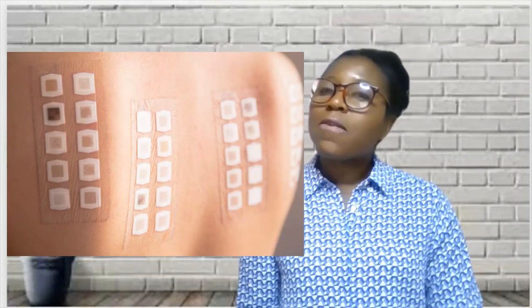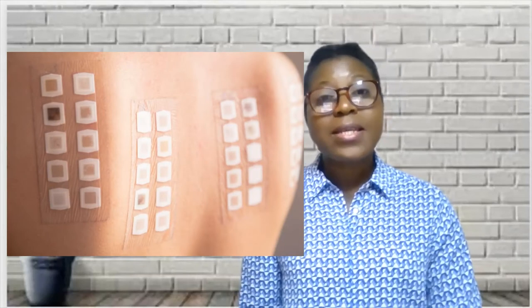Now let's look at how contact dermatitis is diagnosed. Your doctor may be able to diagnose contact dermatitis and identify its cause by talking to you about your signs and symptoms, questioning you to uncover clues about the trigger substance, and examining your skin to note the pattern and intensity of your rash. Your doctor may recommend a patch test to find out if you are allergic to something, which is useful if the cause of your rash is not apparent. During a patch test, small amounts of potential allergens are applied to adhesive patches.